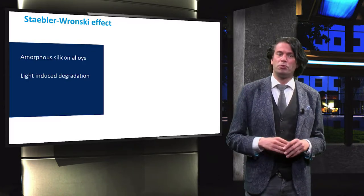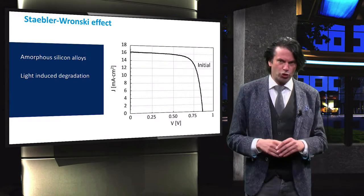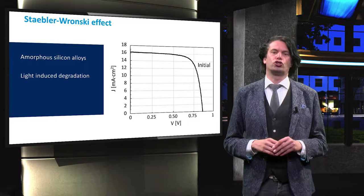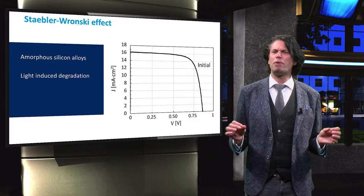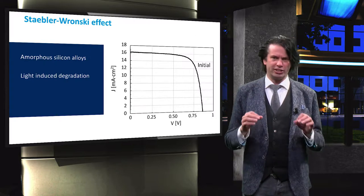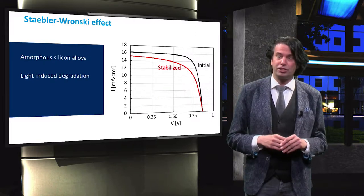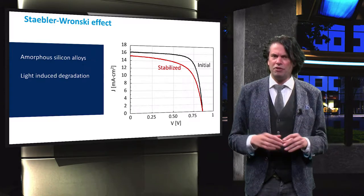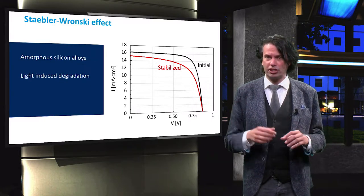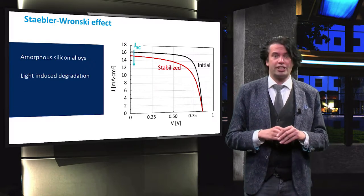Let's look at the performance of an amorphous silicon solar cell. This figure shows a JV curve detailing the initial performance of such a solar cell. After about a thousand hours of illumination, the efficiency of the cell stabilizes. We now introduce the stabilized efficiency of the same cell. We can see that the open circuit voltage is not significantly affected.